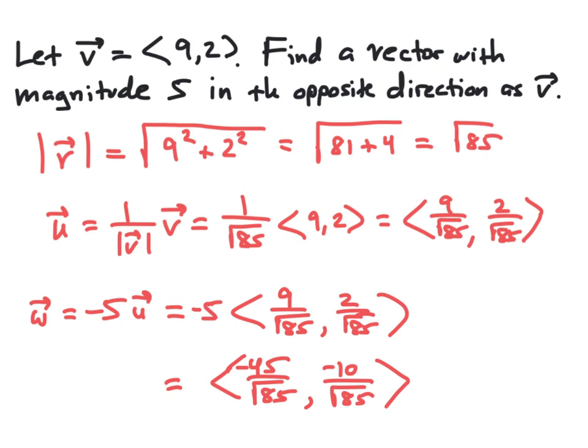One approach is to first find a unit vector in the same direction as v, then adjust it to have magnitude 5 and the opposite direction. To find a unit vector in the same direction as v, we first find the magnitude of vector v. Given component form 9, 2, the magnitude of v is the square root of 9 squared plus 2 squared, which is the square root of 81 plus 4, or the square root of 85. The unit vector u is found by scaling v by 1 over square root of 85, giving components 9 over square root of 85 and 2 over square root of 85.